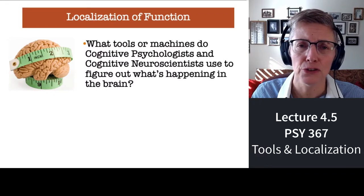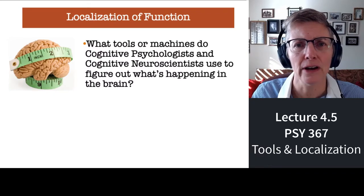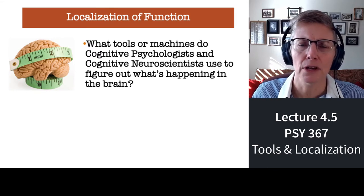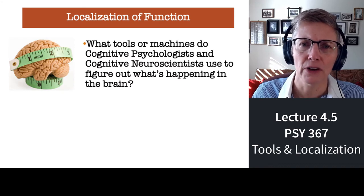Hello there. This is the last mini-lecture that's part of Lecture 4 for my Cognitive Psychology class, and in this section we're going to talk about some of the machines that cognitive neuroscientists use to figure out what the brain is doing, and also to talk a little bit more about how localized some cognitive functions might be.